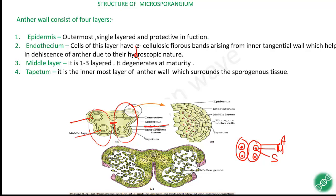The tapetum provides nourishment — that is its main function. It is the innermost layer of the anther. So: epidermis helps in protection, endothecium also helps in protection, the middle layer also helps in protection, and the tapetum helps in nourishment.